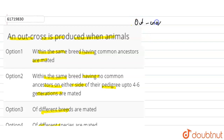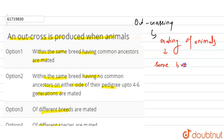Outcrossing means the practice of mating animals within the same breed but having no common ancestor — the animals have no common ancestor on either side of their pedigree up to 4 to 6 generations.